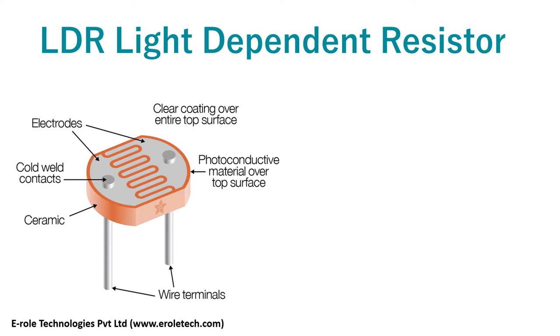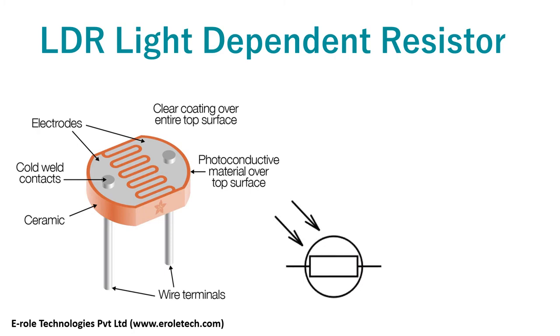This is an LDR. It has two terminals. When light falls on the LDR, the resistance between these two terminals decreases. This is the symbol of LDR.